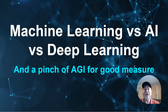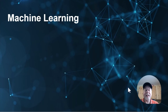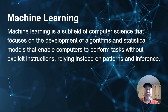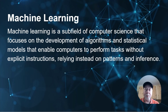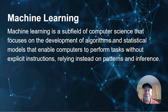Machine learning versus AI versus deep learning, and a pinch of AGI thrown in for good measure. So what is machine learning? Machine learning is a subfield of computer science that focuses on the development of algorithms and statistical models that enable computers to perform tasks without explicit instructions, relying instead on patterns and inference. With machine learning, you present it with examples and it learns from those examples, working out the relationships. It involves training algorithms on data sets to make predictions or decisions rather than coding them to perform a specific task.